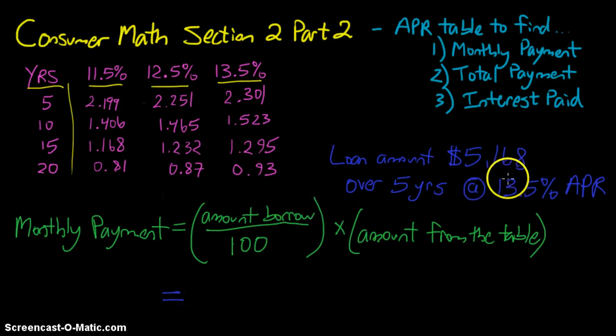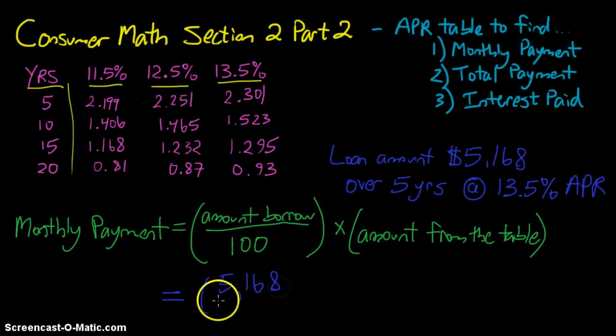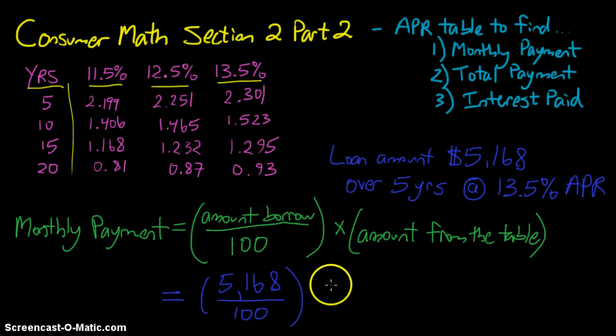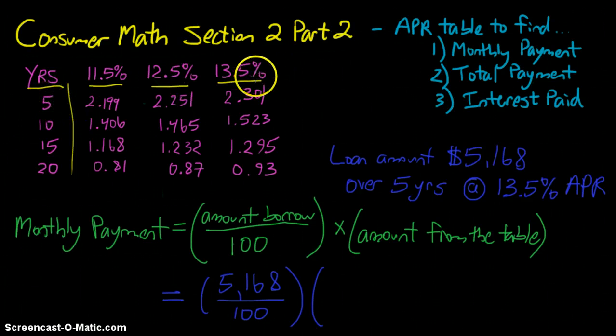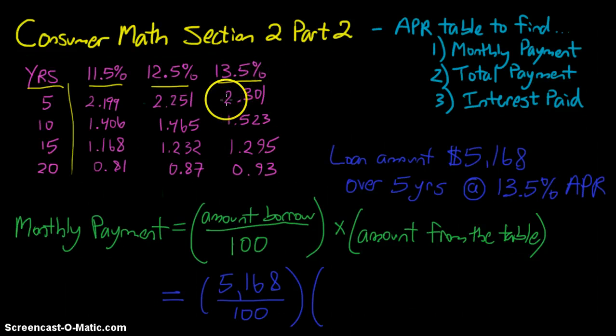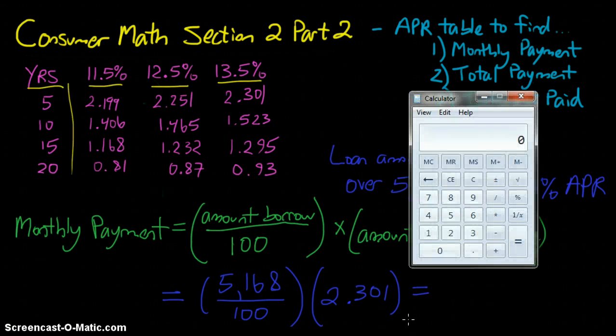So now it's just a matter of plugging in the proper values into this formula to find the monthly payment. So our amount borrowed we see here is 5,168 divided by 100 to find out how many times 100 will fit into it. And then finally multiply that whole amount by the amount from the table. We need to use the number of years that were financed and then the APR that we're being charged. So if we do it for 5 years and we have a 13.5% APR, we're looking at 2.301. So we're going to multiply that entire thing by 2.301.